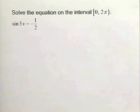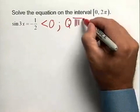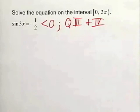First thing you want to do is recognize the sine value is negative or less than 0. And what this tells us is that our answer is going to lie in quadrant 3 and another answer will lie in quadrant 4. So we'll keep that in mind as we solve this trig equation.